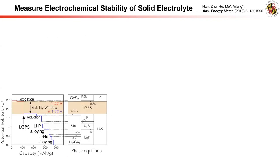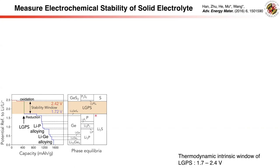For ALGPS, the grand-potential phase diagram shows phase equilibria with the lowest Gibbs free energy at each potential. ALGPS shows favorable reduction starting around 1.7V due to phosphate reduction, and lithium-germanium alloy reactions at around 0.5V. The oxidation of ALGPS becomes thermodynamically favorable at 2.4V due to the oxidation of sulfur. Therefore, the thermodynamic intrinsic stability window of ALGPS is approximately 1.7V to 2.4V.